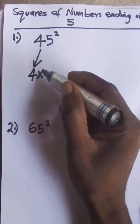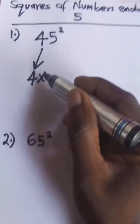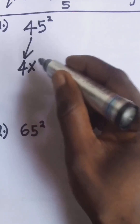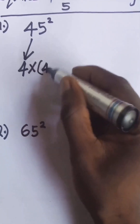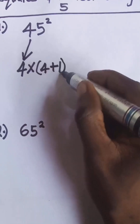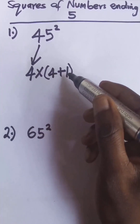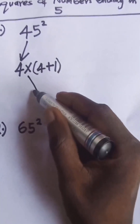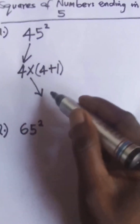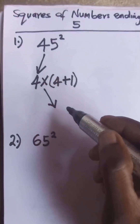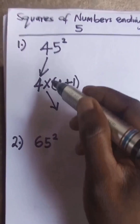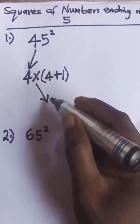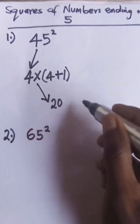Now increase that 4 by one — so 4 plus 1 is 5. We are going to do this in two parts. This is the first part: 4 times 5, which gives us 20. So 20 is the first part of the solution.